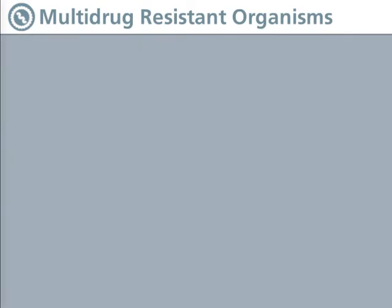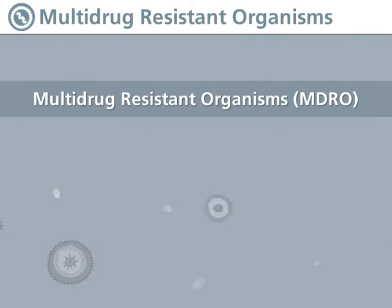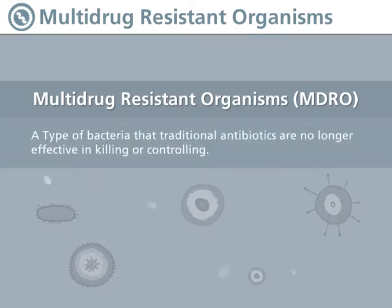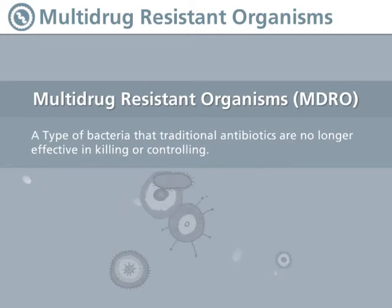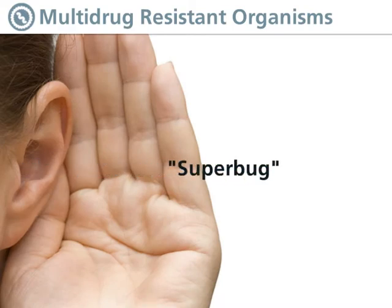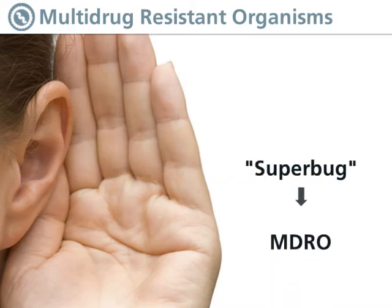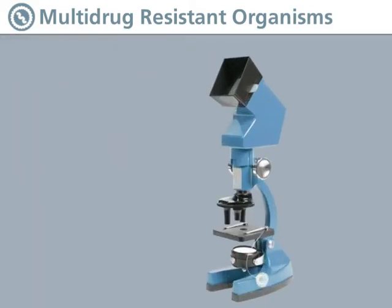What's the difference between a regular infection and an MDRO? Multi-drug resistant organisms, abbreviated MDRO, are a type of bacteria that traditional antibiotics are no longer effective in killing or controlling. You may also hear the term 'superbug,' which is synonymous with MDRO. For the purposes of this course, we will be using the term MDRO.